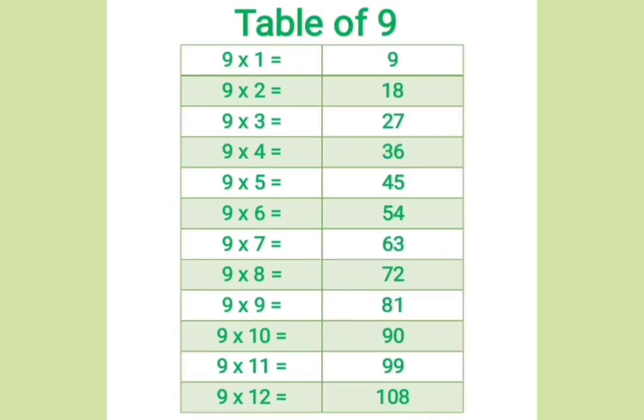Nine ones are nine, nine twos are eighteen, nine threes are twenty-seven, nine fours are thirty-six, nine fives are forty-five, nine sixes are fifty-four, nine sevens are sixty-three, nine eights are seventy-two, nine nines are eighty-one, nine tens are ninety, nine elevens are ninety-nine, nine twelves are one hundred eight.